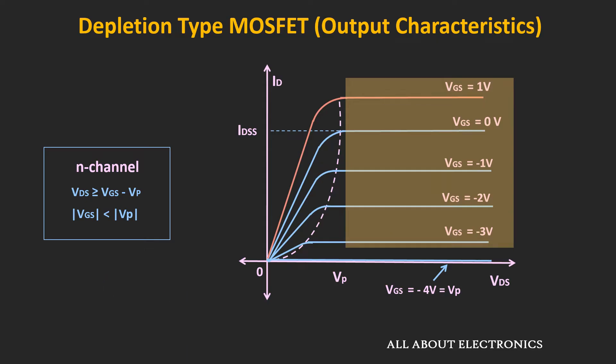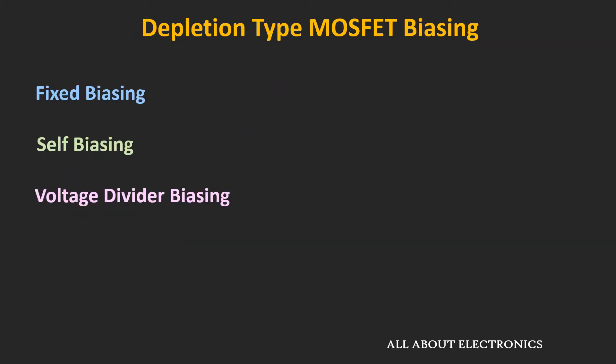Similar to the JFET, there are three basic biasing techniques for this depletion type MOSFET: fixed bias, self-bias, and voltage divider bias. Since the transfer characteristics are similar to the JFET, the analysis of these biasing techniques is also very similar. We have already seen all these biasing techniques for the JFET, so here we will quickly go through them for the depletion type MOSFET. Let's start with the fixed bias.